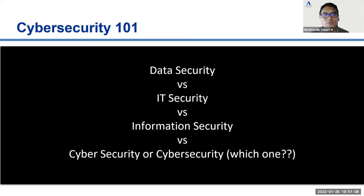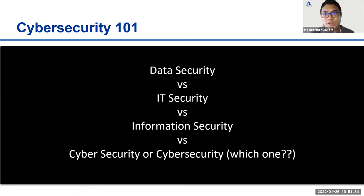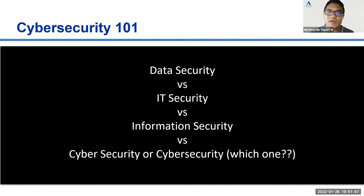When I started off, it wasn't called cybersecurity — it was called data security, then it evolved to IT security, then information security, and now cybersecurity. Data security was when people were concerned about data stored in mainframes like IBM mainframes. Then IT security emerged as networks appeared — servers, hubs, switches — and they wanted to protect the perimeter of the infrastructure.